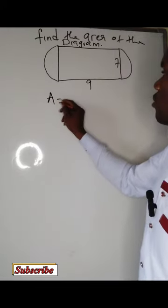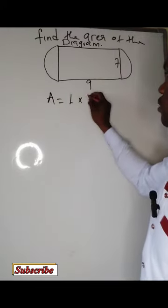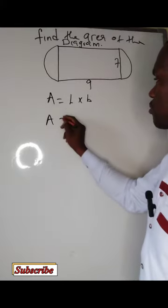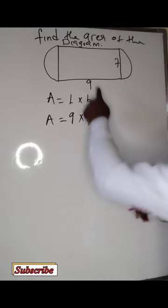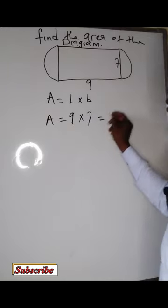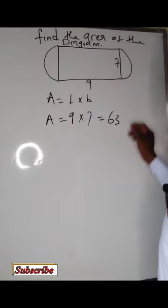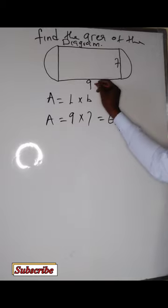Area of the rectangle says length times breadth. So we simply say 9 times 7. This will give me 63 units. Whatever the unit is, let you see cm. So this will be cm squared.